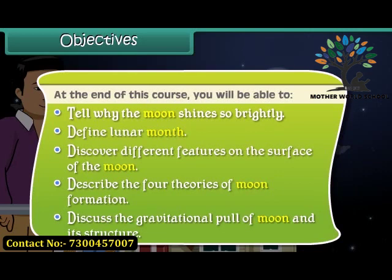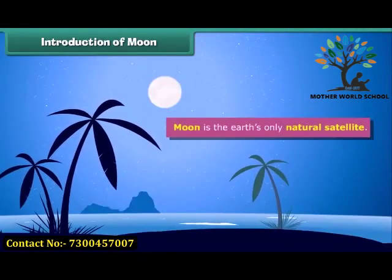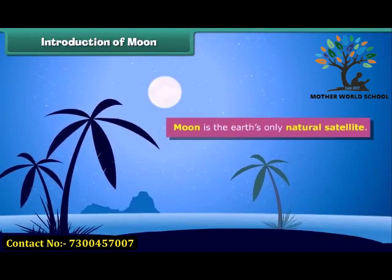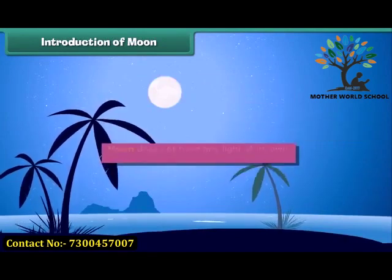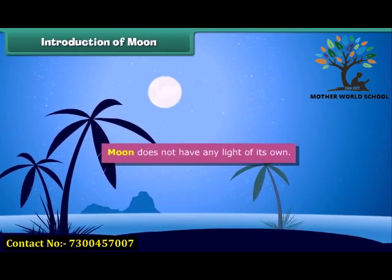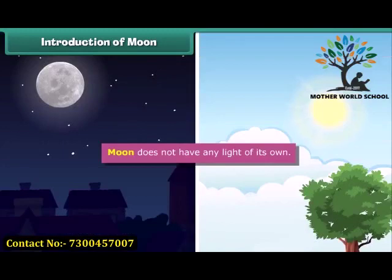The moon is the Earth's only natural satellite. It is the second brightest object in the sky after the Sun. However, the moon does not have any light of its own. The light you see is actually from the Sun reflecting off the surface of the moon. So if the Sun wasn't there, we would not be able to see the moon.